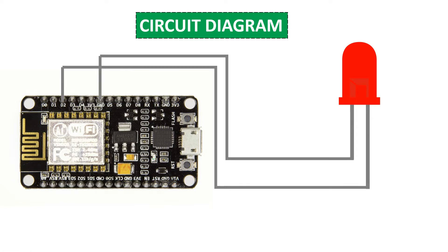We are not using the Arduino IDE locally because you can control the LED from your smartphone or your web browser. For that we're going to use the Arduino IoT Cloud. Let's see how we can use the Arduino Cloud, set it up, and upload the code from the cloud to our ESP8266 to control this LED blinking on and off.